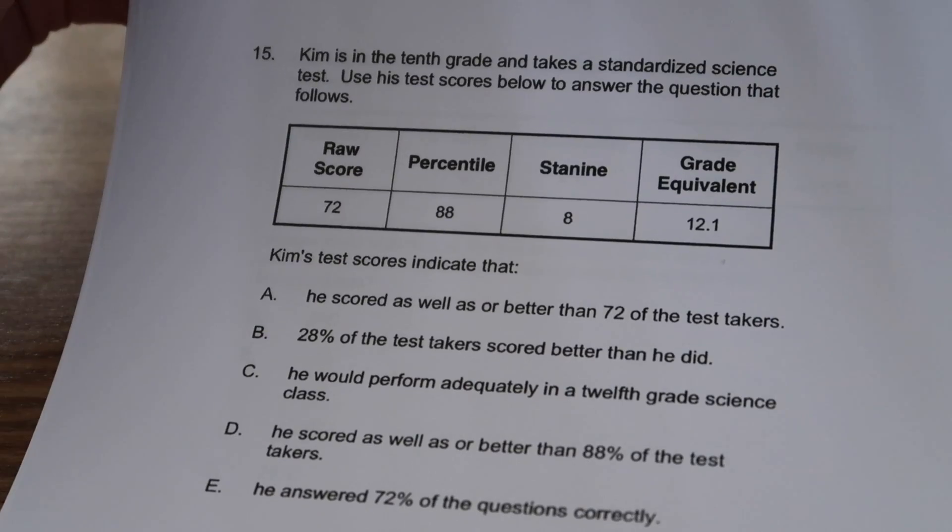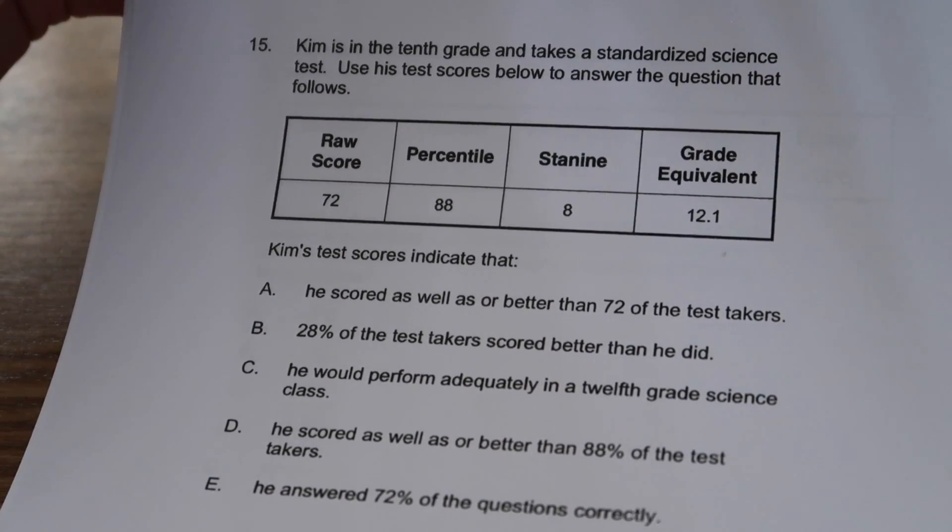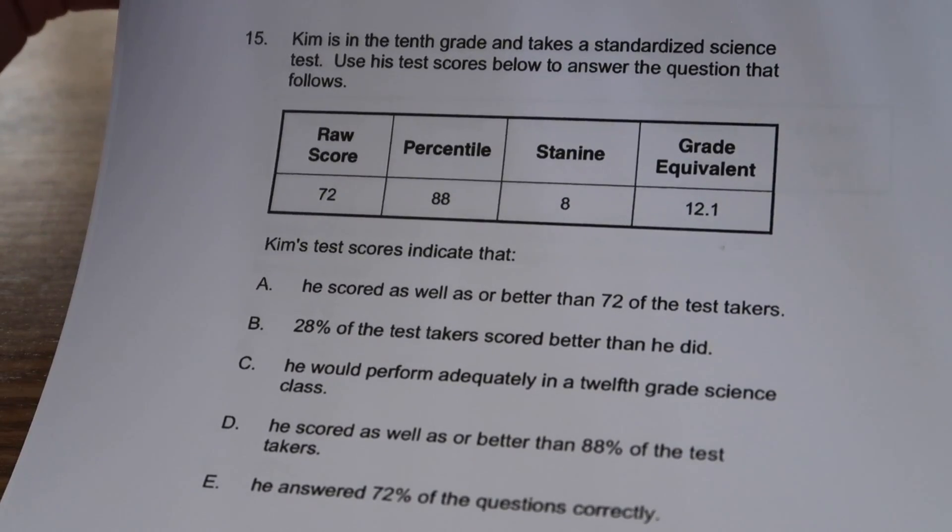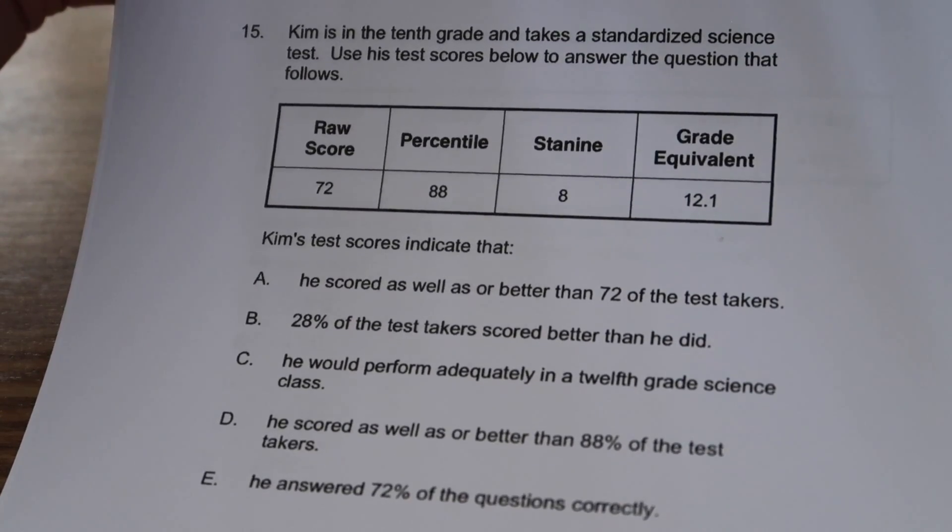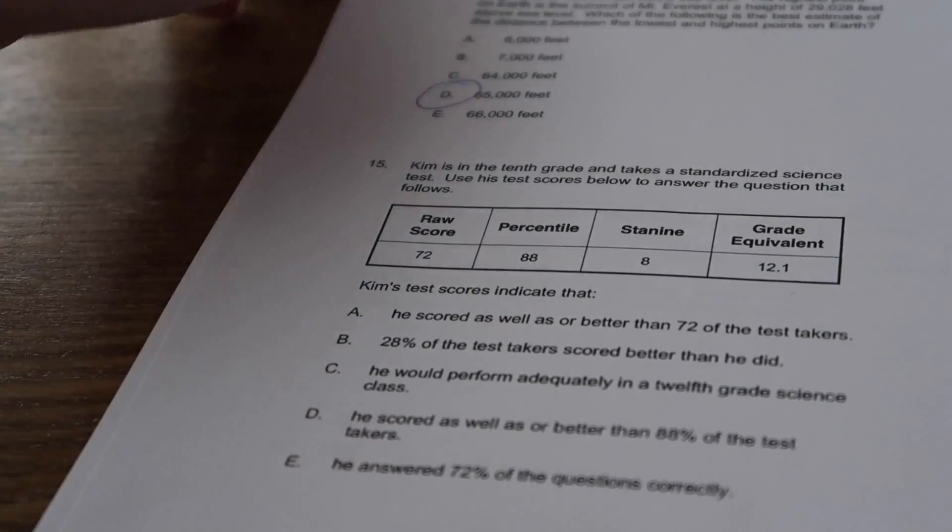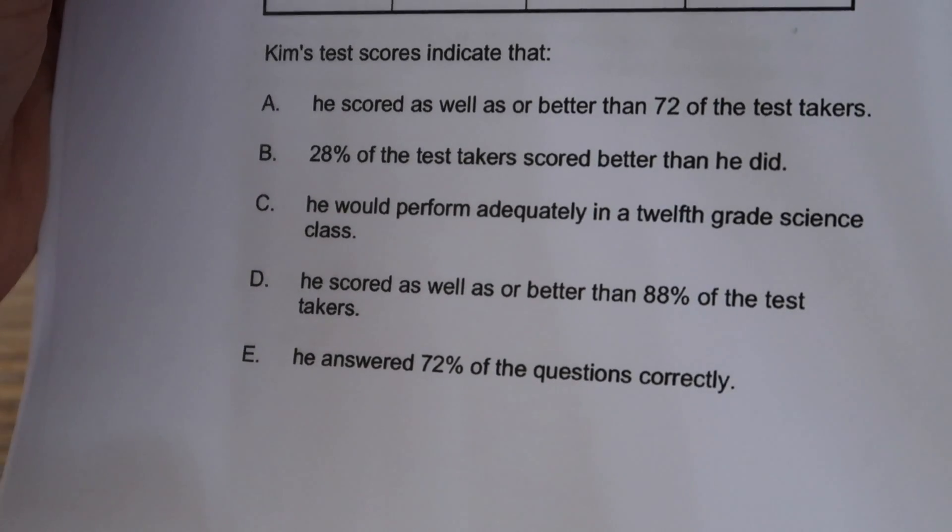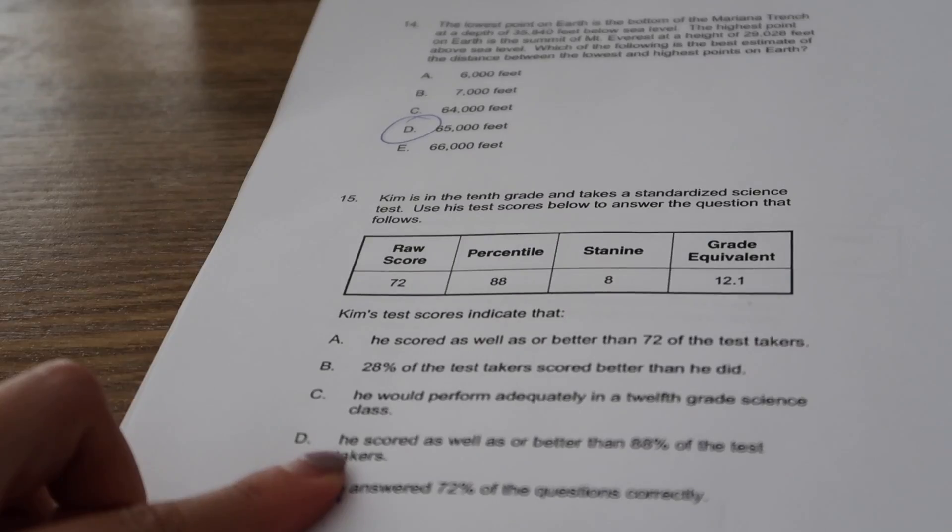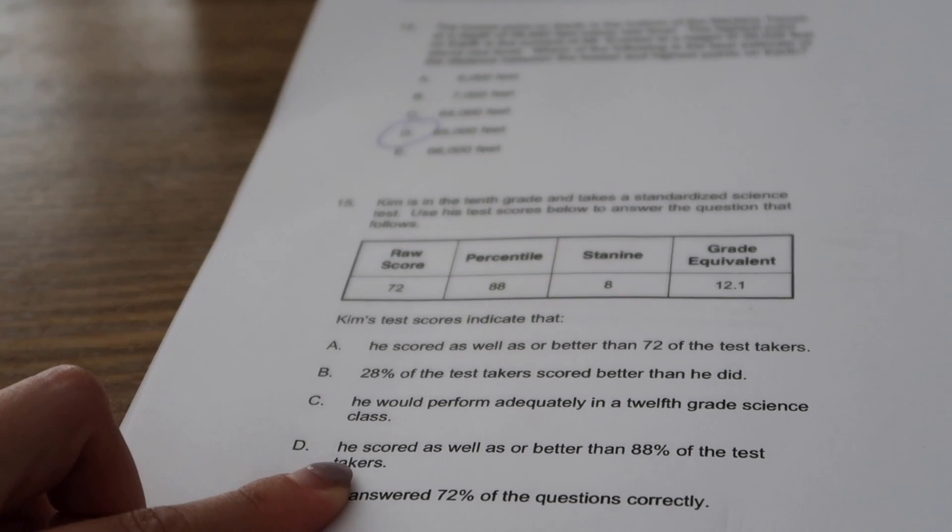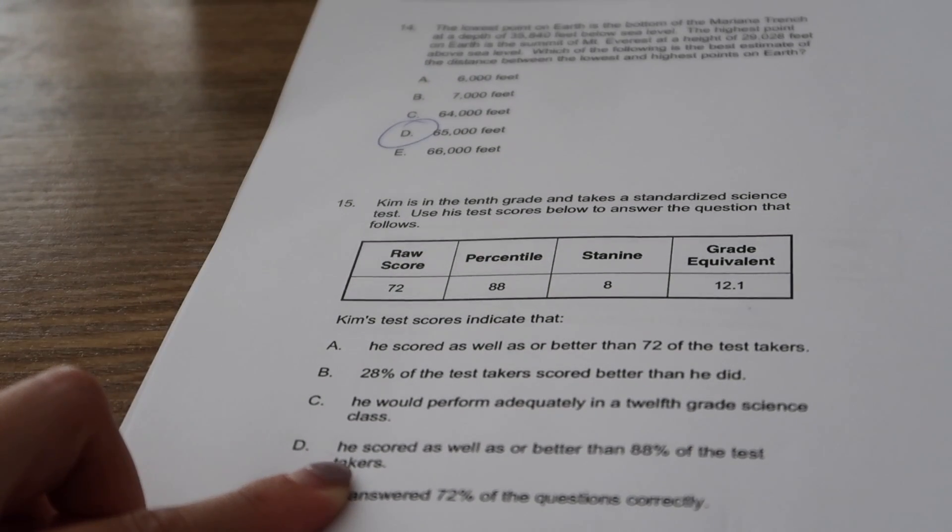Kim is in the 10th grade and takes a standardized science test. Use his test scores below to answer the questions that follow. Raw score, percentile, state 9, grade equivalent. Kim says the score indicates that he scored as well as or better than 88% of the test takers. They're trying to trick you because this is just a raw score and we don't know what his actual percent is. So D.